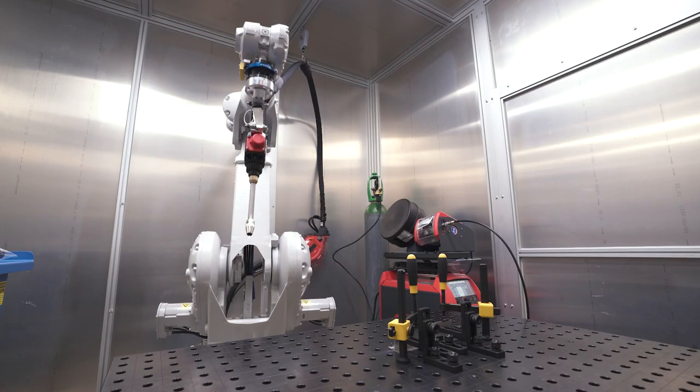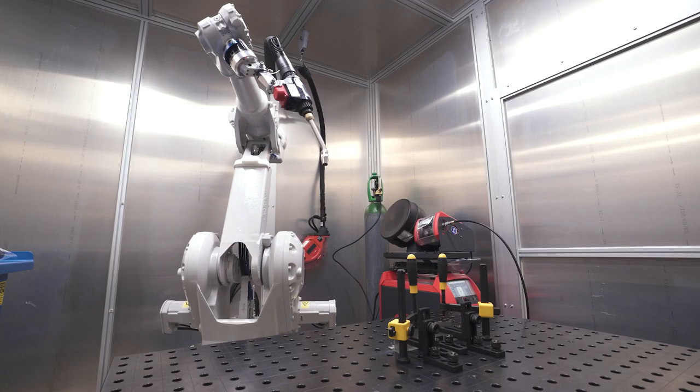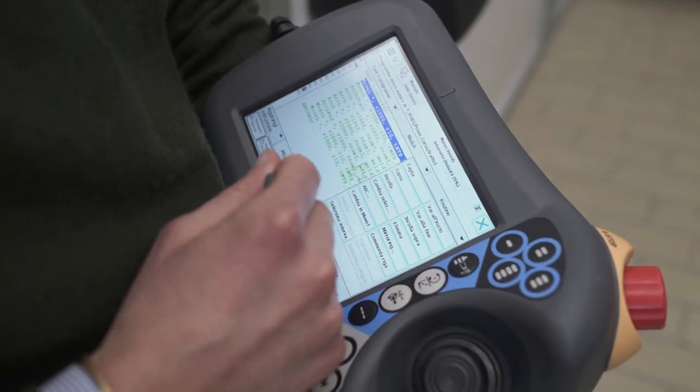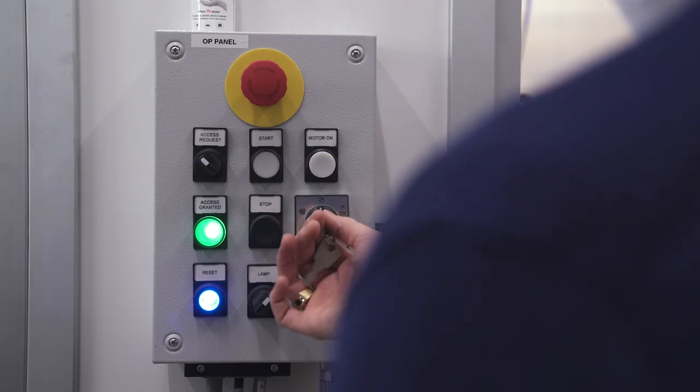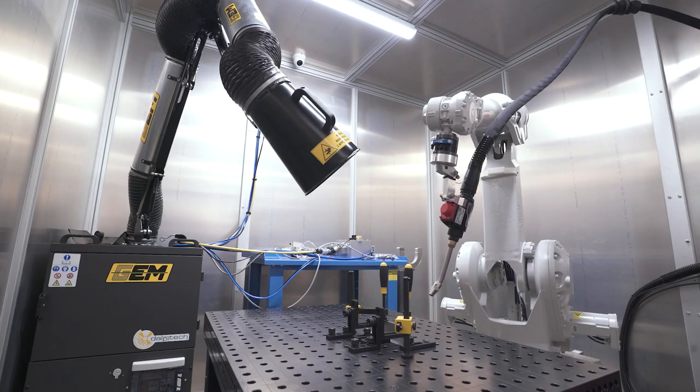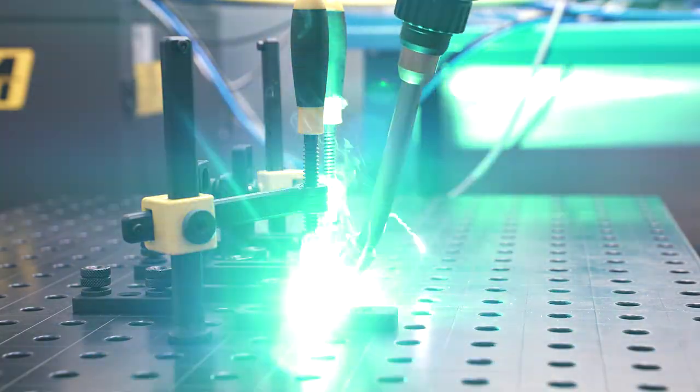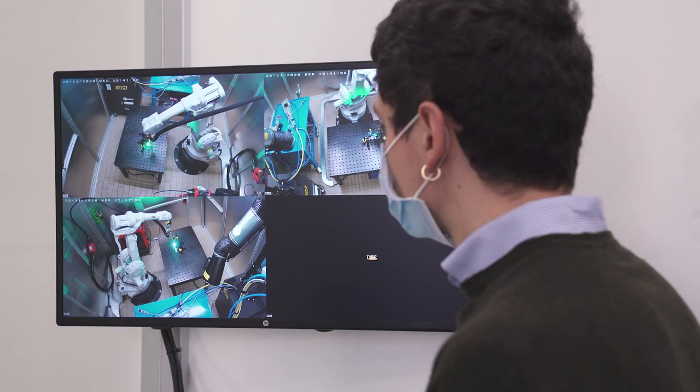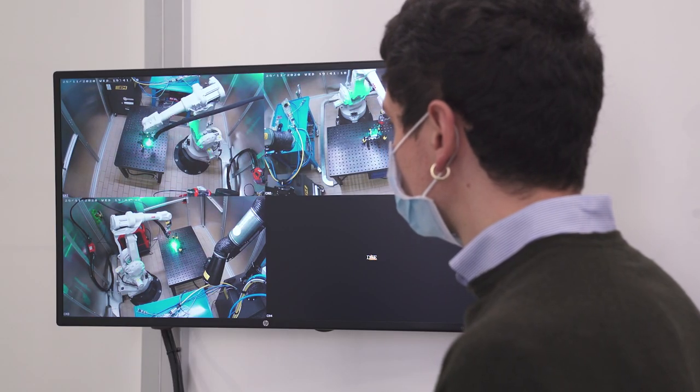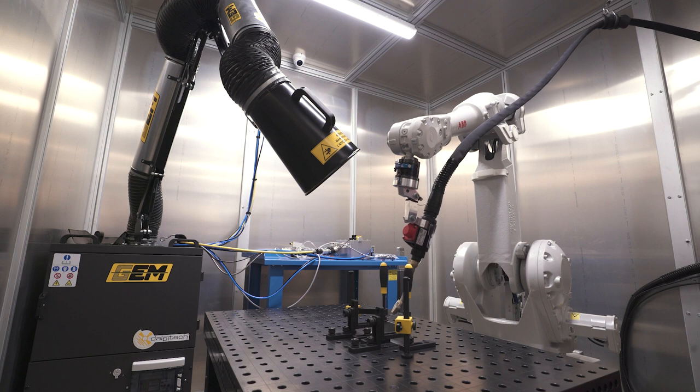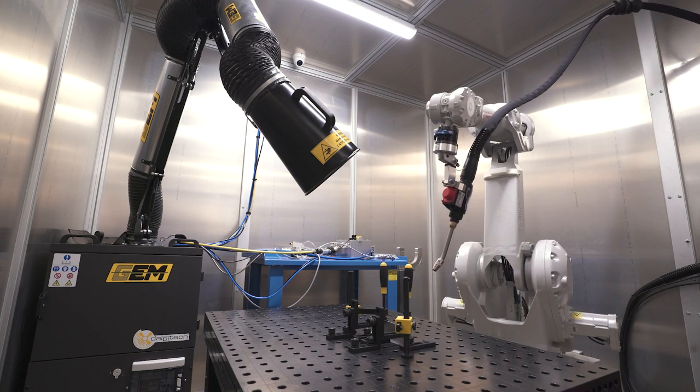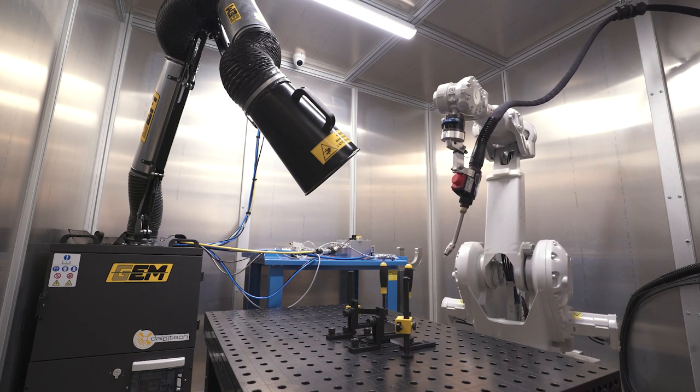6-axis anthropomorphic robot with a payload of 20 kg, equipped with laser ND YAG head, spot 0.6 mm, surface hardening and surface low temperature treatments head, rectangular spot laser 2 mm width head, cold metal transfer CMT arc welding head.